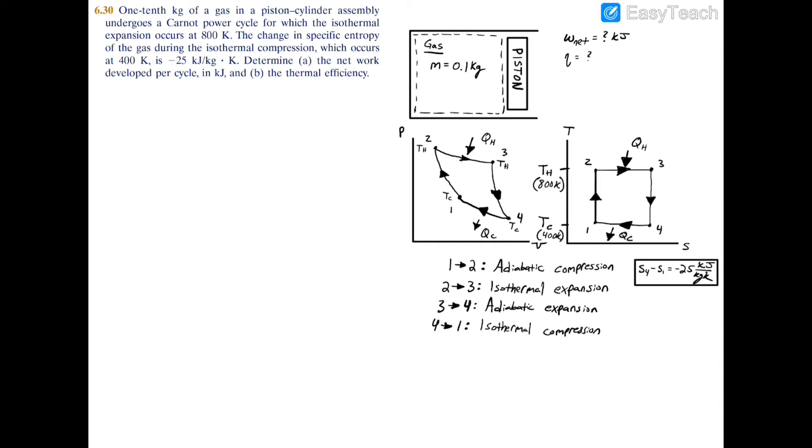Process 4-1 is isothermal compression. We're increasing in pressure and decreasing in volume, and this is where we reject heat Q_c out of the system. T4 = T1.